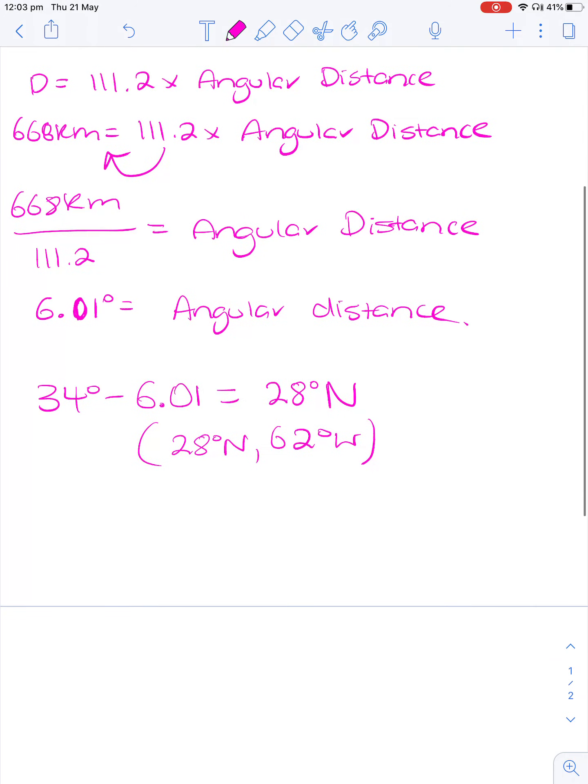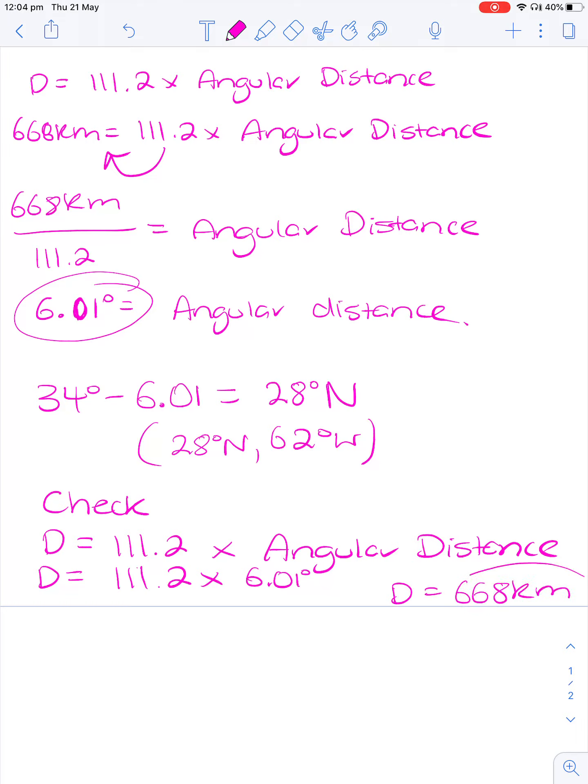Now if you would like to get extra marks for justifying, because it says in the question you have to justify, I would be checking by subbing the information back in. So we're going to try and find D. So we're going to go 111.2 times the angular distance that we found earlier. And that's going to give us 668 kilometers, which is the correct answer that we had.